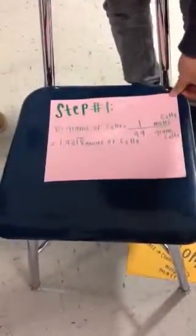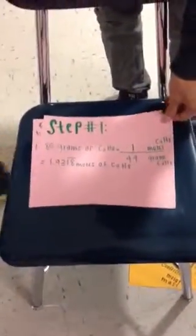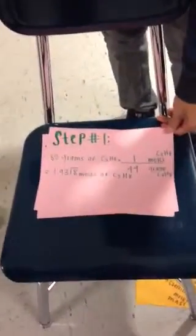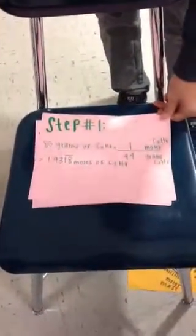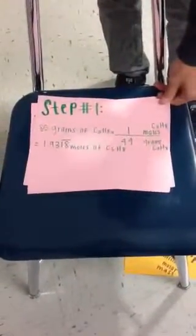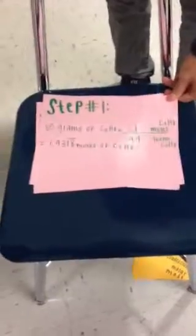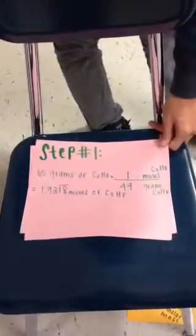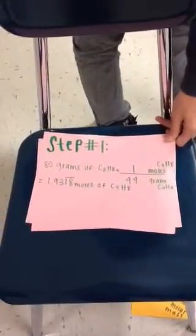This is a three-step problem. Step one: we start with what we have. We have 85 grams of C3H8, and we multiply that by C3H8 moles divided by 44 grams of C3H8. That equals 1.9318 moles of C3H8.